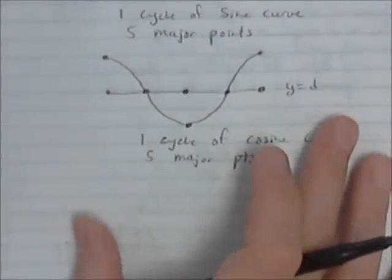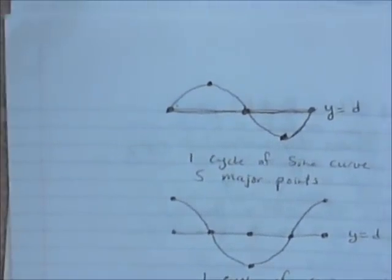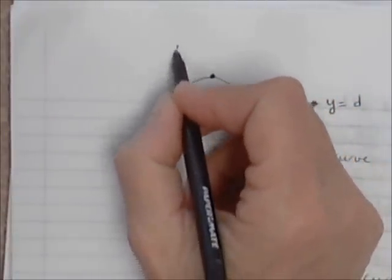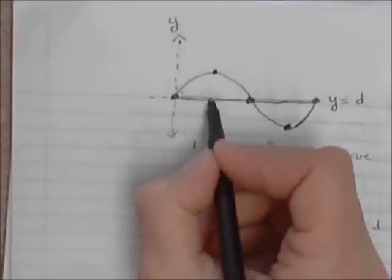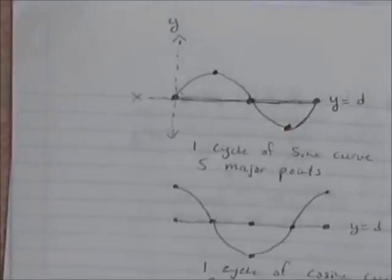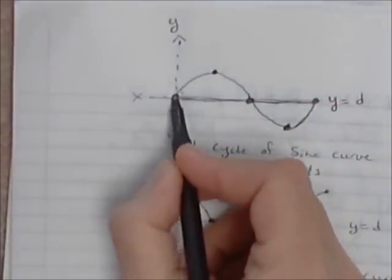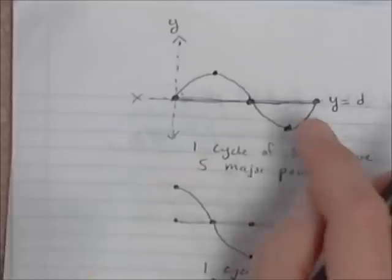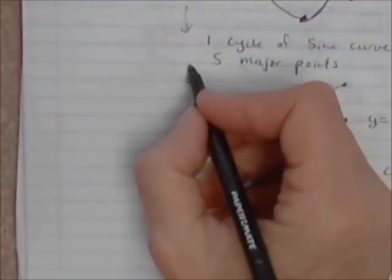If we have a horizontal shift in our sine and cosine curve, we have to calculate the left and the right endpoint. With no shift, the y-axis is here and the x-axis is the midline. But when you start shifting things horizontally, you have to calculate the starting point and the ending point, then calculate the halfway points between the start and the end, and then the halfway points between those two middle points.